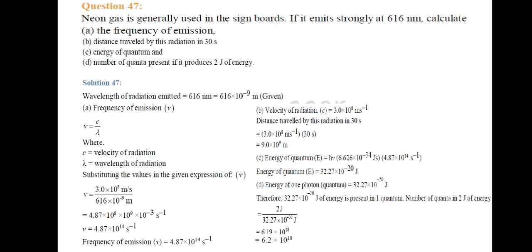Next part: distance travelled by this radiation in 30 seconds. Velocity of radiation is 3.0 × 10⁸ m/s. Distance = 3.0×10⁸ m/s × 30 s = 9.0 × 10⁹ meters.